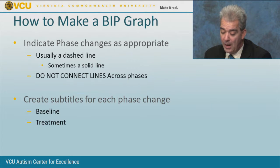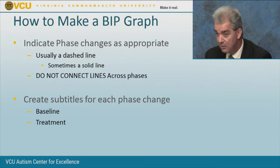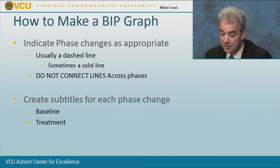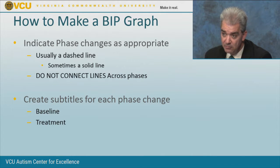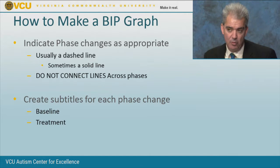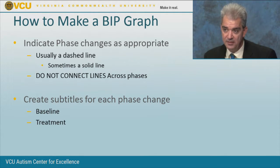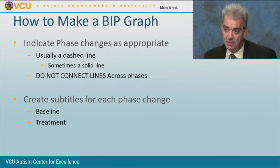This is how you do a BIP graph. While you're evaluating your function-based assessment data, you can still collect baseline data on your behavior intervention plan. We simply take aggression and track it by day per period. Most schools will do it day by day. Let's make it simple: Monday through Friday on your x-axis. Connect data points within a phase — if we're in baseline for a week, connect all five baseline data points together. Then start treatment on day six, put in a phase line, and start a new set of data. Session six has a new data point not connected to data point five.